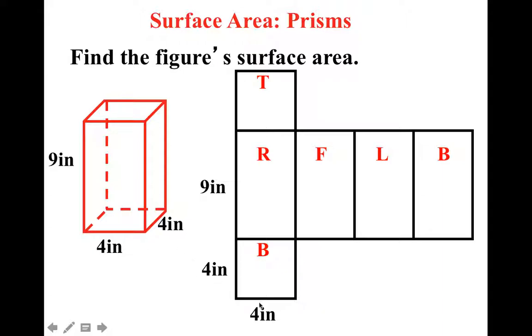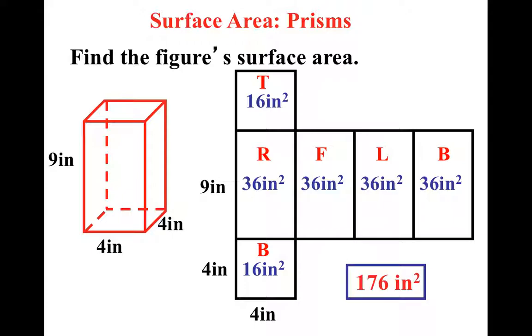Notice on the bottom, I have four by four. On the sides, I have a nine. So let's think about this. The bottom would be four times four, which is 16 inches squared. The top would then also be the exact same thing. The right, which is four by nine in this situation, is 36 inches squared. And if the right is 36 inches squared, the front would be 36 inches squared. The left and the back would also be 36 inches squared.